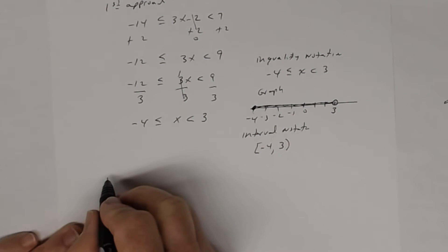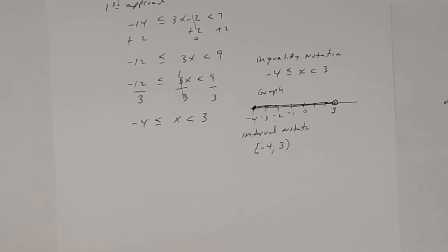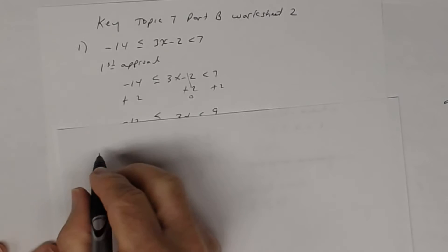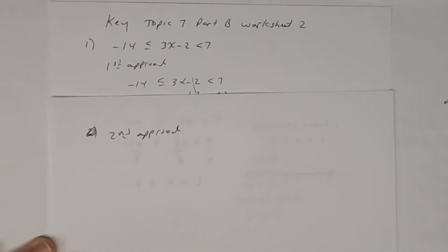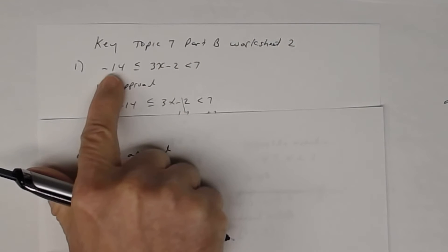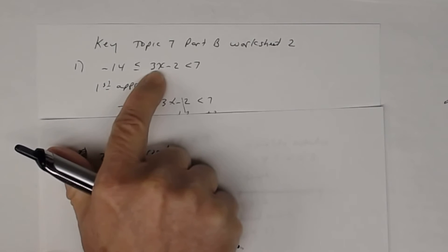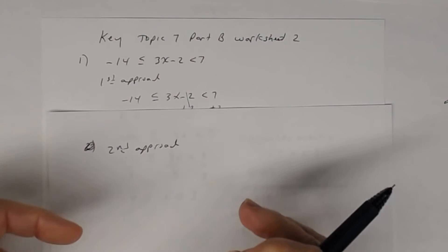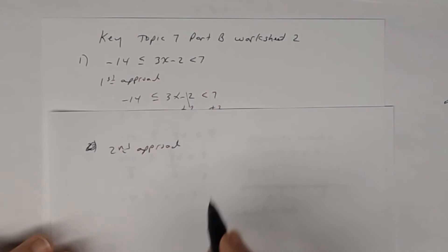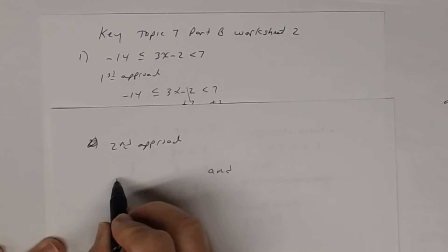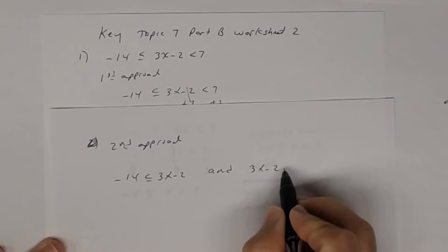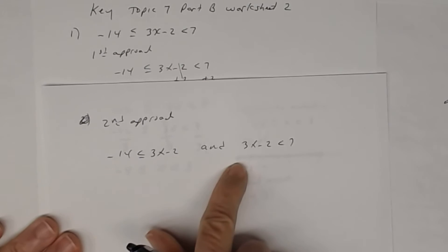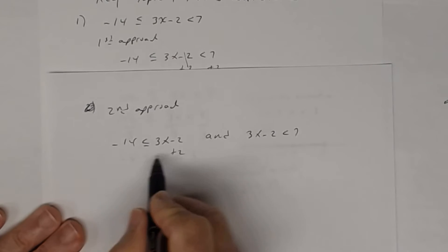Now let's look at the second approach. With a compound inequality, I said 'negative 14 is less than or equal to 3x minus 2, and at the same time 3x minus 2 has to be less than 7.' That's where you split it apart using that AND statement. So when you have a compound inequality, you're dealing with an AND statement.